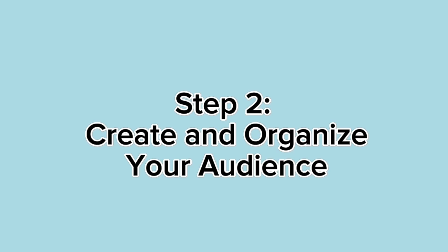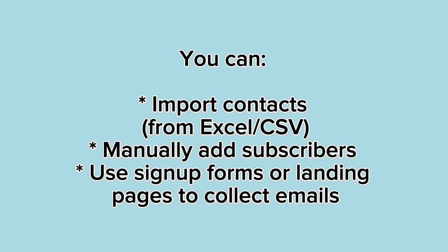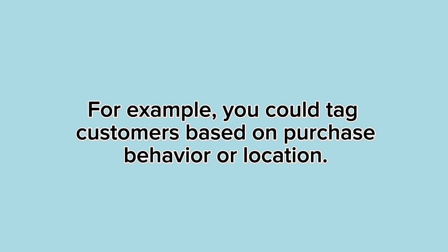Step 2: Create and organize your audience. Your audience is your email list — people who've signed up to hear from you. You can import contacts from Excel or CSV, manually add subscribers, or use signup forms or landing pages to collect emails. Mailchimp helps you keep your audience organized with tags, groups, and segments, allowing for targeted email campaigns. For example, you could tag customers based on purchase behavior or location.